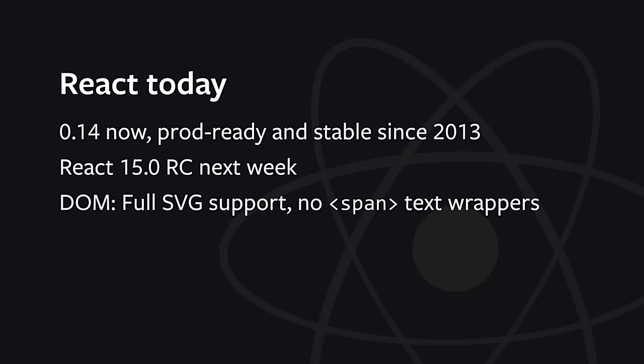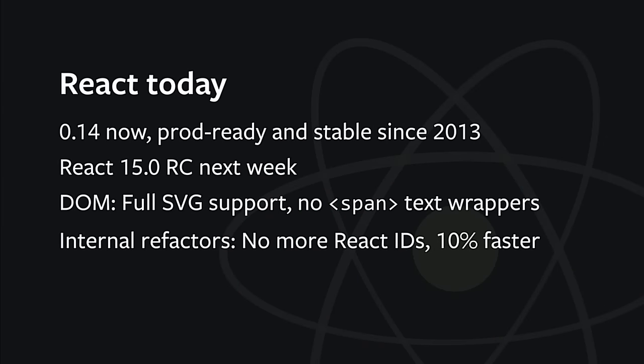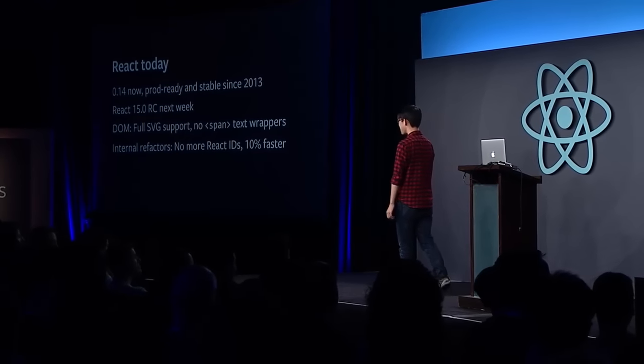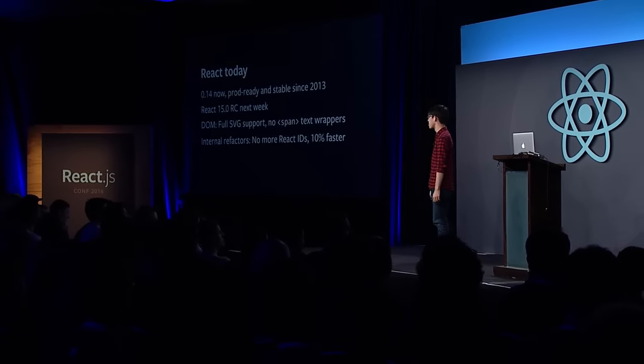We're going to release a release candidate for React 15 next week. In the DOM version, we now have full SVG support for any tags and attributes. Text nodes in the tree no longer have spans wrapped around them — we're using HTML comment tags instead, so they won't show up in events or CSS rules. We're also getting rid of the noscript tags when you return null, replacing those with HTML comments as well. We also got rid of React IDs completely, so if you inspect element now you won't see all that. And React is also about 10% faster — a big part of that is because we got rid of those IDs.